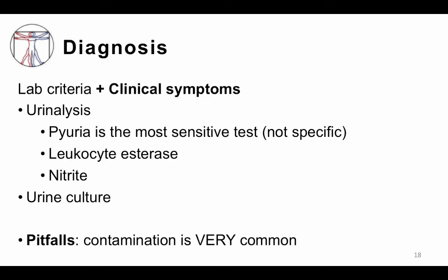The diagnosis consists of laboratory criteria plus clinical symptoms — laboratory criteria on their own are insufficient to make the diagnosis. The urinalysis is probably the most important test, and pyuria, which is white blood cells in the urine, is the most sensitive part of the urinalysis. Note that this is not specific, and other conditions can cause pyuria besides UTIs. Leukocyte esterase is commercially available on dipsticks and measures an enzyme released by white blood cells, though it is a surrogate marker for pyuria and thus less sensitive and specific. Nitrites on dipsticks measure the conversion of nitrate to nitrite and are a good test for high amounts of Enterobacteriaceae.